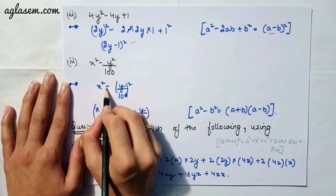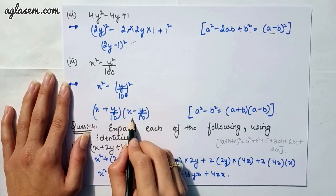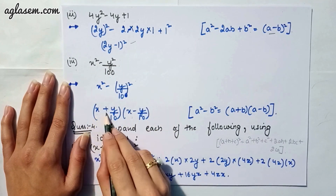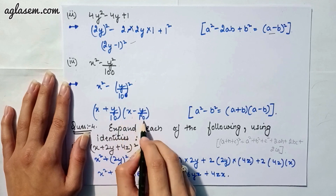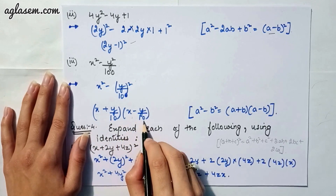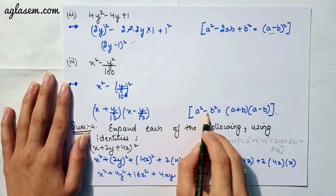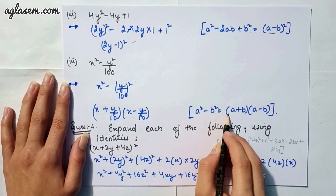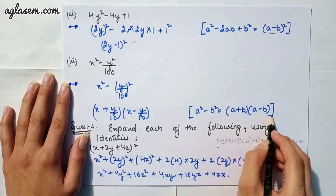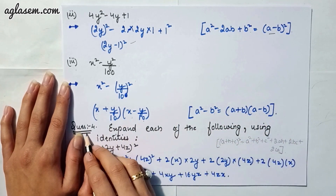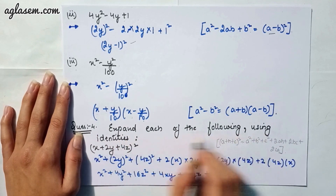Moving to our third part: x² − y²/100. We rewrite it as x² − (y/10)². Applying the identity a² − b² = (a + b)(a − b), the answer is (x + y/10)(x − y/10).